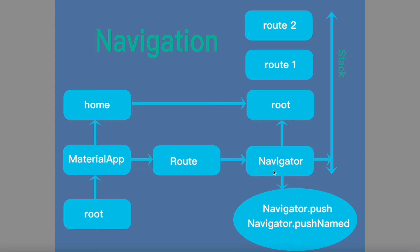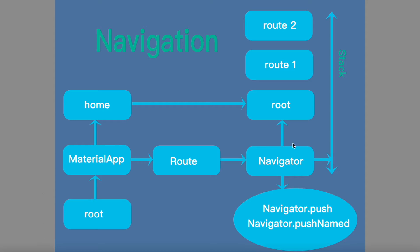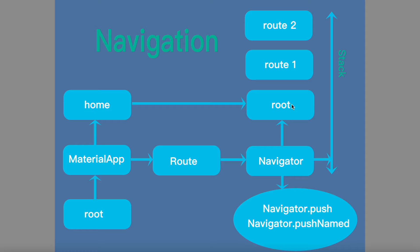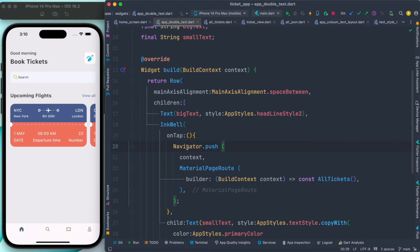Here we'll see what a Navigator widget is, and then we'll see the connection between MaterialApp, route, and Navigator widget. After that, we'll see how the Navigator widget works as a stack and manages route screens on the stack. We'll also see how the home route works as the root route at the navigation stack and stays at the bottom. We'll take a look at Flutter documentation and work step by step.